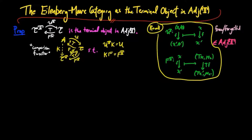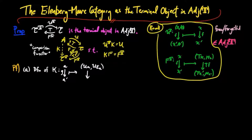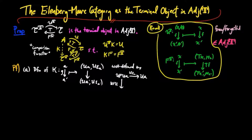For the proof, we need to define the comparison functor K. Given an A-object A, K(A) is defined to be U(A) with T-action given by U(Epsilon_A), and given an A-morphism g from A to A', K(g) is equal to U(g). We can see that U(g) is T-equivariant, since the following diagram commutes by naturality of the counit of the adjoint situation.